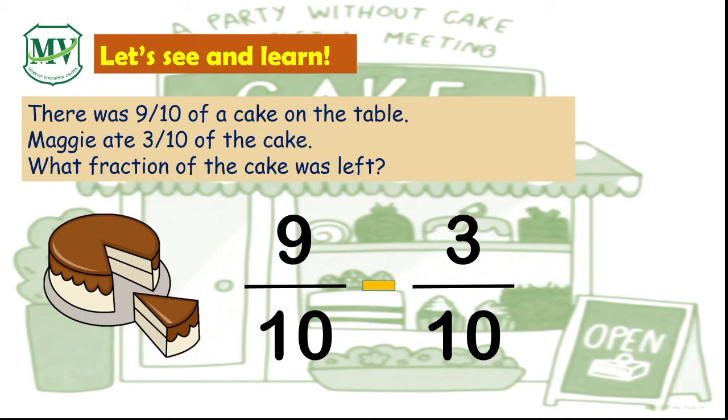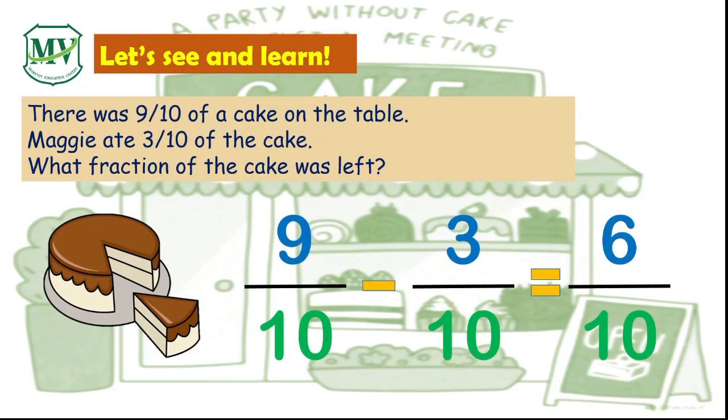Do you remember how to do this math operation? Again, it should be the same denominator, which in this case is 10. We subtract the numerators: 9 minus 3 equals 6. The result will be 6 tenths. So to answer the question, 6 tenths of the cake was left.